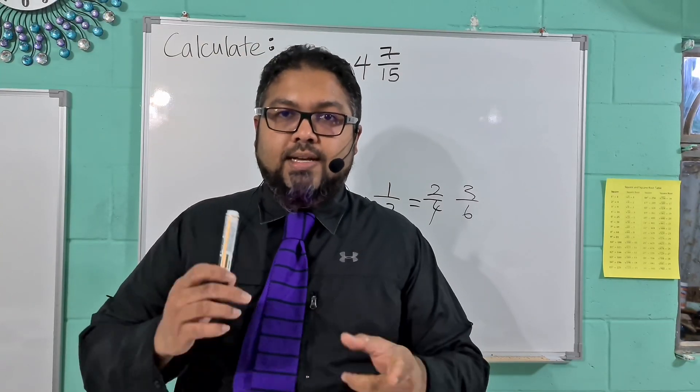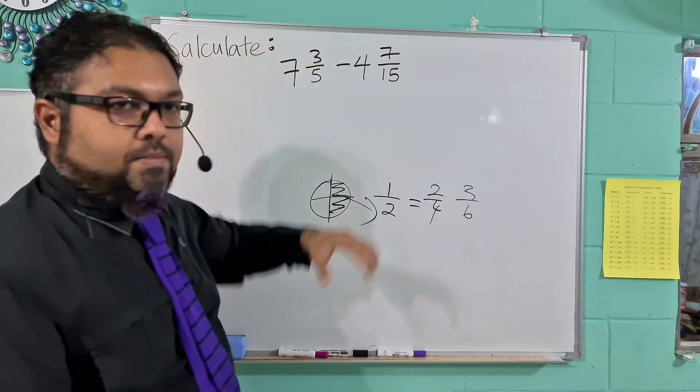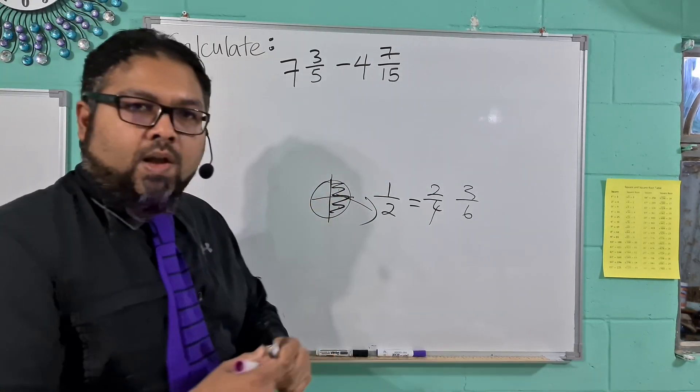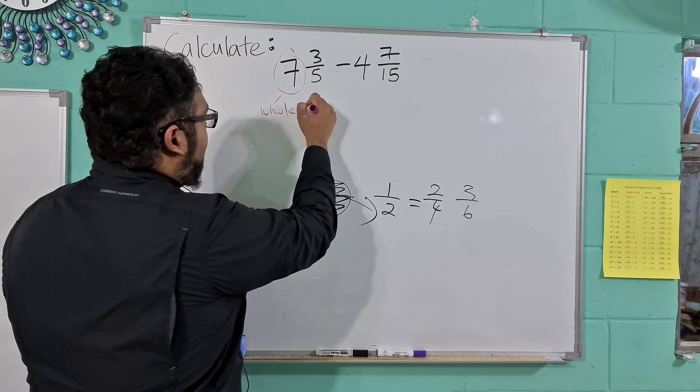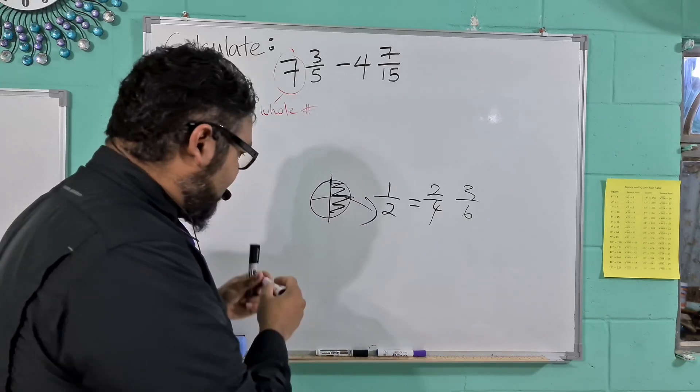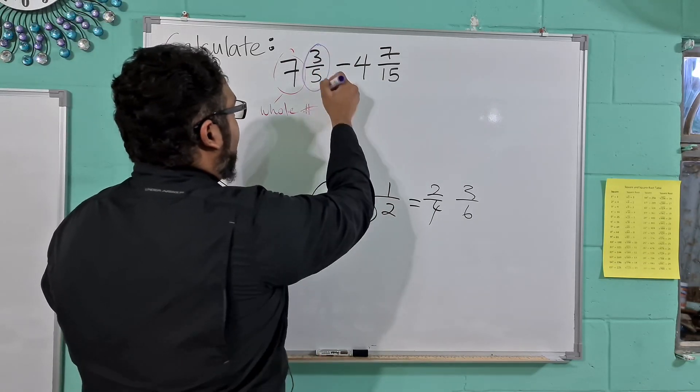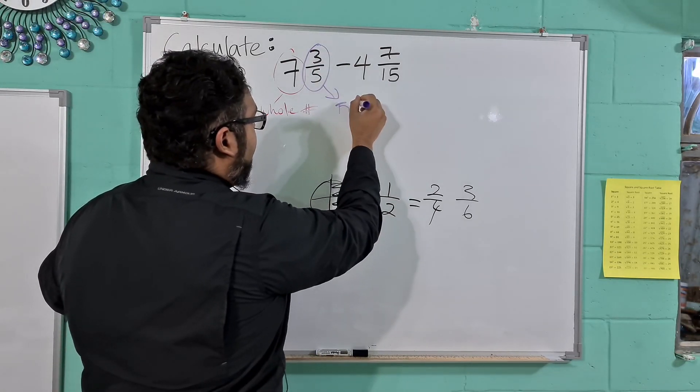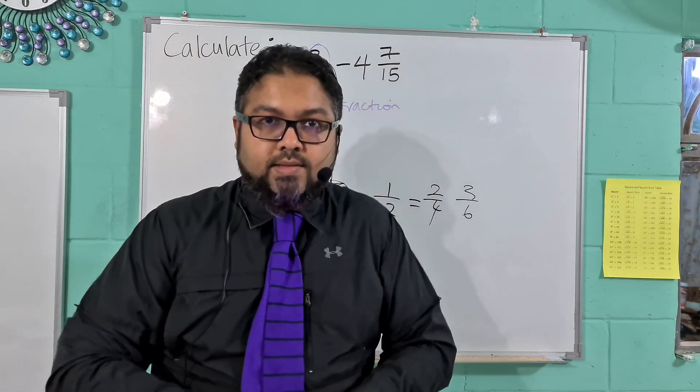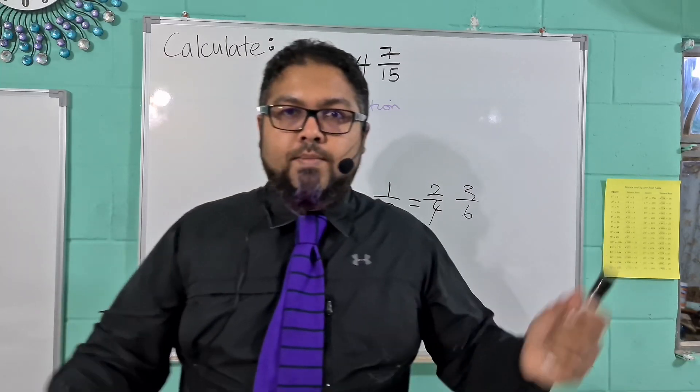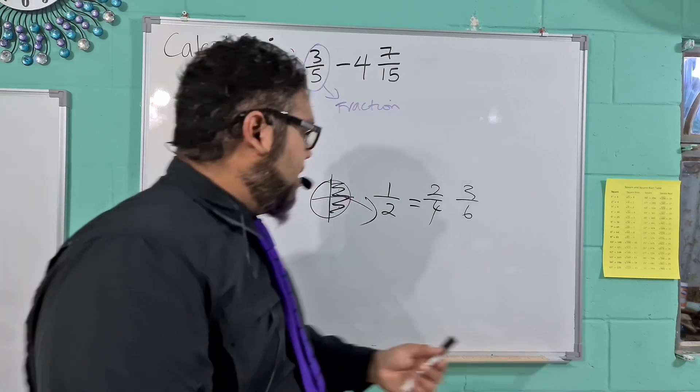The second thing we need to know is we need to assess the question. This question is not just fractions, we also have mixed numbers. So essentially what we have here is this here is a whole number, and this here is a fraction. With whole numbers those are really easy to work with. If we have 4 minus 2, answer is 2.